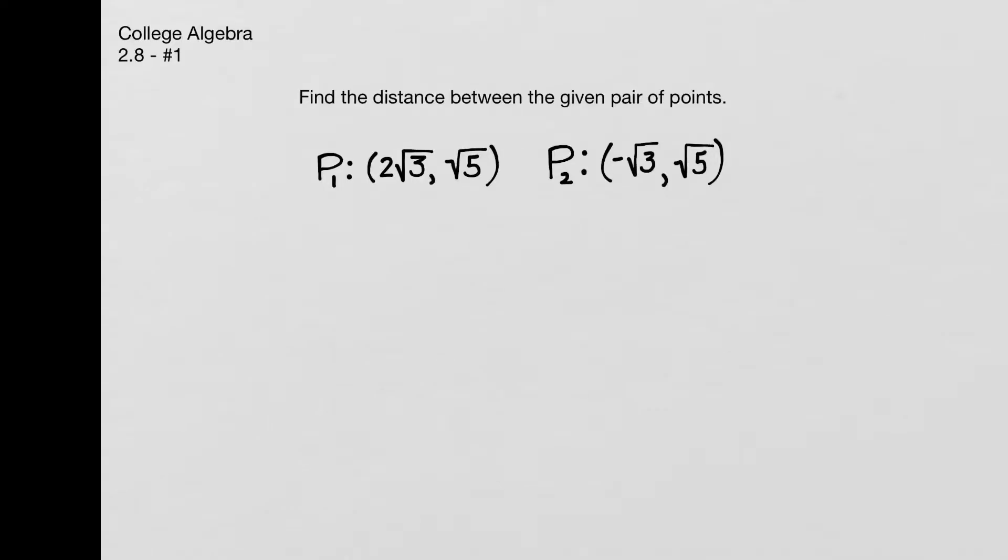In this problem, we need to find the distance between points P1 and P2. The formula for distance is d squared equals x2 minus x1 quantity squared plus y2 minus y1 quantity squared.